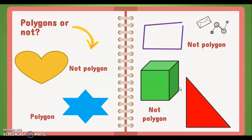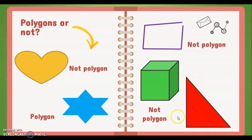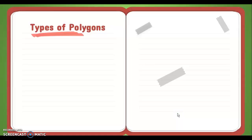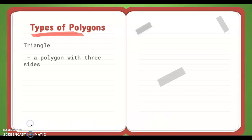Lastly, if you said that this is a polygon, you are correct. This polygon is closed, it has three or more straight sides, and it is flat. Now there are different types of polygons. These polygons are named according to the number of their sides. The first one is the triangle — a triangle is a polygon with three sides.